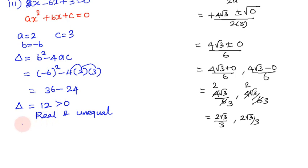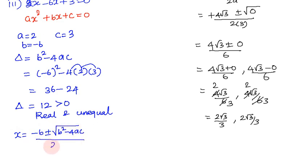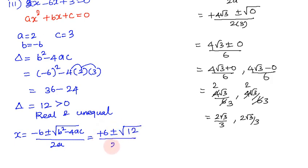Now we solve for the roots using x = (-b ± √(b² - 4ac)) / 2a. With -b = 6 (since b = -6), and √12 = 2√3: x = (6 ± 2√3) / (2 × 2) = (6 ± 2√3) / 4.